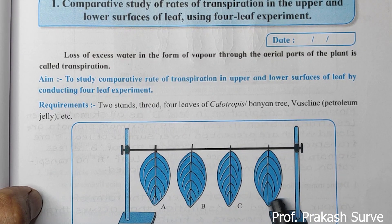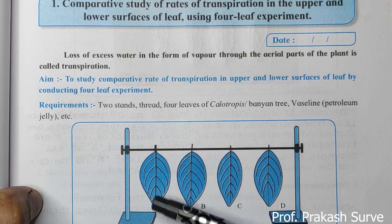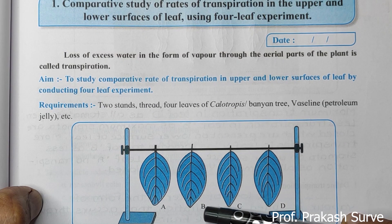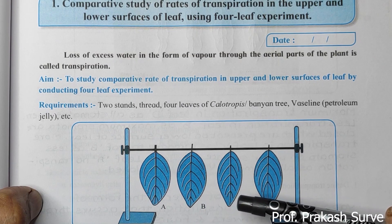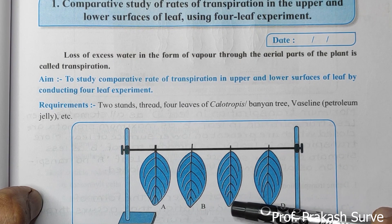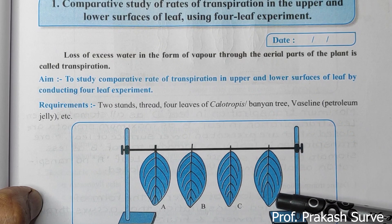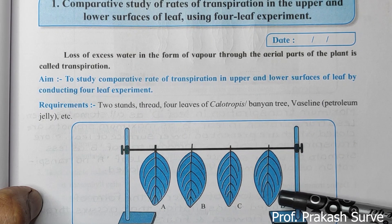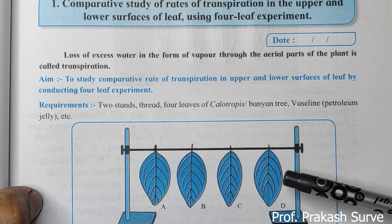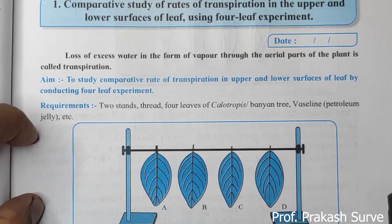There are four leaves in this experiment. Leaf A has petroleum jelly applied on both surfaces. Leaf B has petroleum jelly applied only on the lower surface. Leaf C has petroleum jelly applied on the upper surface. Leaf D has no petroleum jelly applied. According to this setup, we get our results.